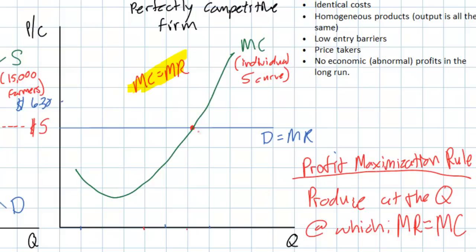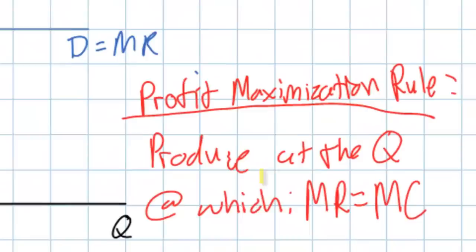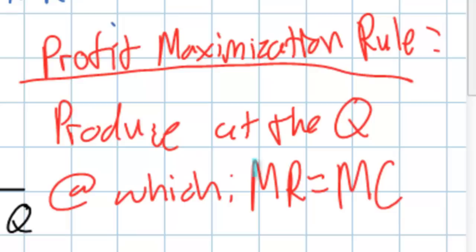This brings us back to QPM. At the intersection of marginal cost and marginal revenue, this firm is maximizing its total profits. If it produces below QPM, it can improve total profits by increasing output. If it produces beyond QPM, it can increase profits by decreasing output — because beyond QPM, marginal cost is greater than marginal revenue, indicating you're producing too much. Below QPM, marginal cost is less than marginal revenue, indicating you're producing too little.